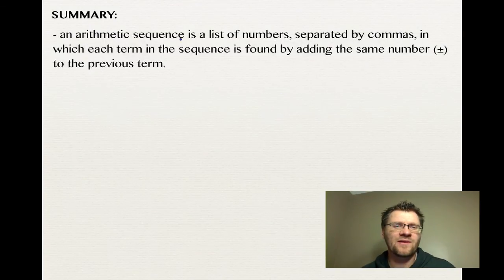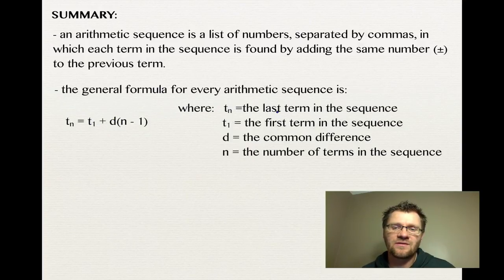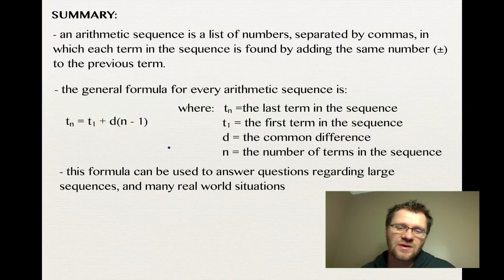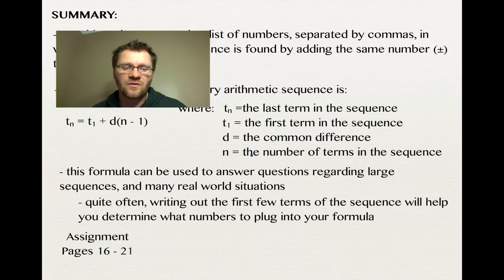In summary: an arithmetic sequence is a list of numbers where each term is found by adding the same number (positive or negative) to the previous term. The general formula is tn = t1 + d(n - 1), where tn is the term you're looking for, t1 is the first term, d is the common difference, and n is the number of terms. This formula can be used for large sequences and real-world situations. Your assignment is on pages 16 to 21. Good luck and we'll see you in class.